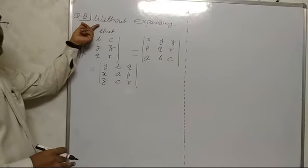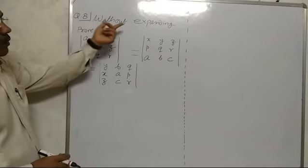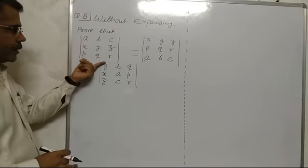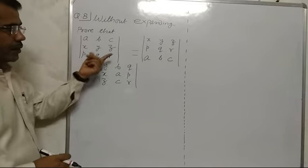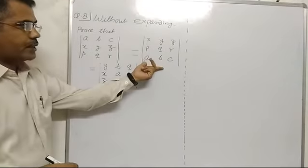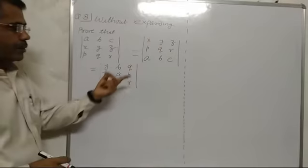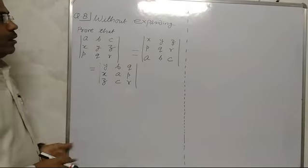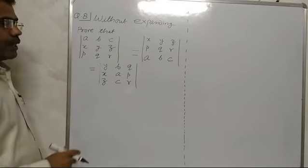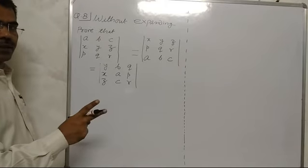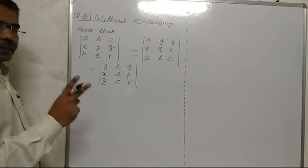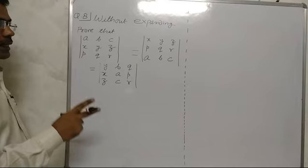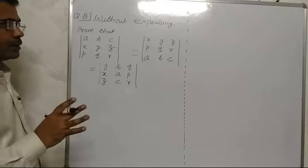Question number 8. Without expanding, prove that this determinant equals this, and this determinant equals this. Without expanding, two rules for determinants can be used: interchange row and column, and second, transpose of determinants.